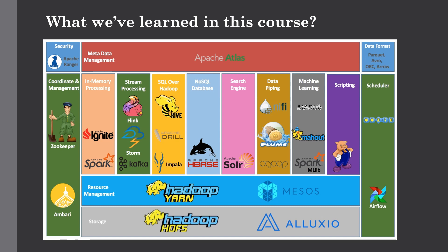Then we have also seen stream processing, where we ingested and processed real-time data using different services. We saw Kafka, which is a very popular open-source platform for ingesting and processing big data. We also saw Flume, which is used for ingesting real-time data from various sources and integrates well with other services. Then we saw Apache Spark Streaming — not fully real-time, but a micro-batch processing engine for processing data streams. And finally, we saw Flink and Storm, which are Apache tools used for processing real-time data.